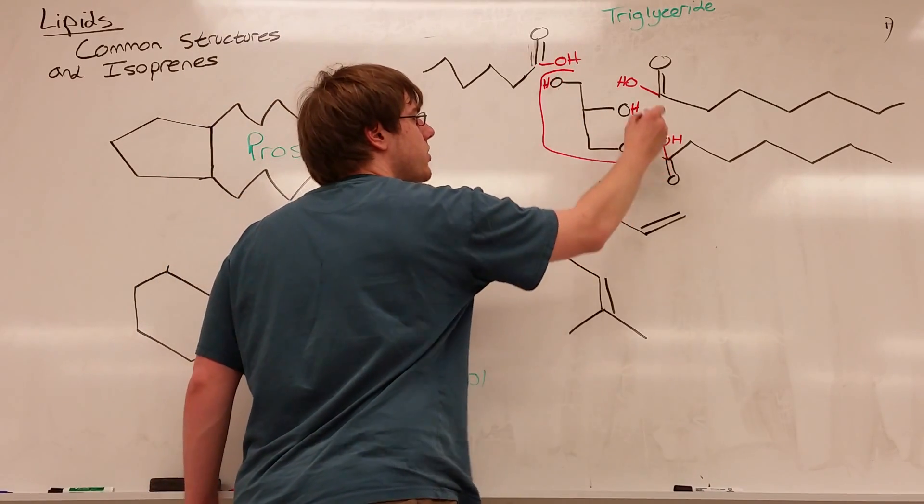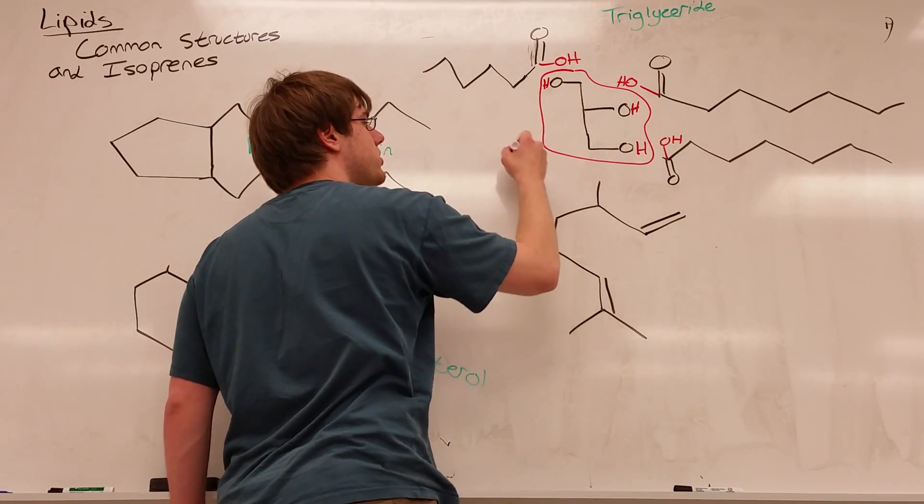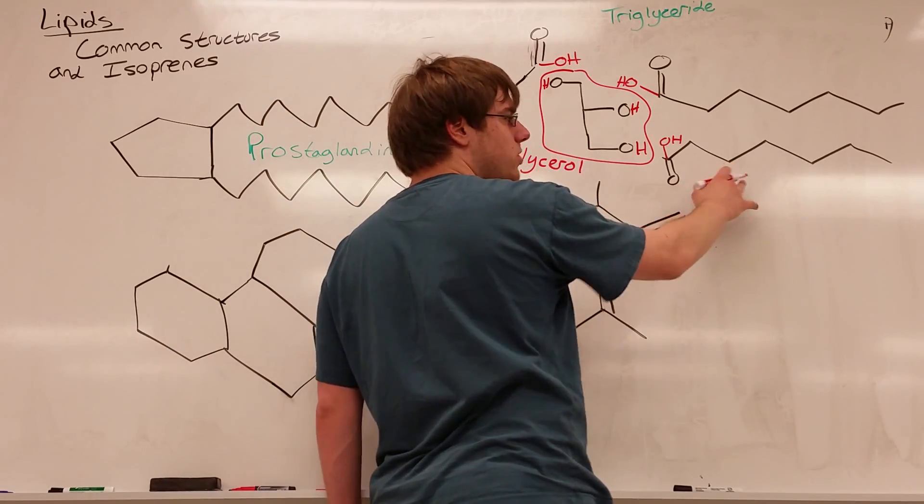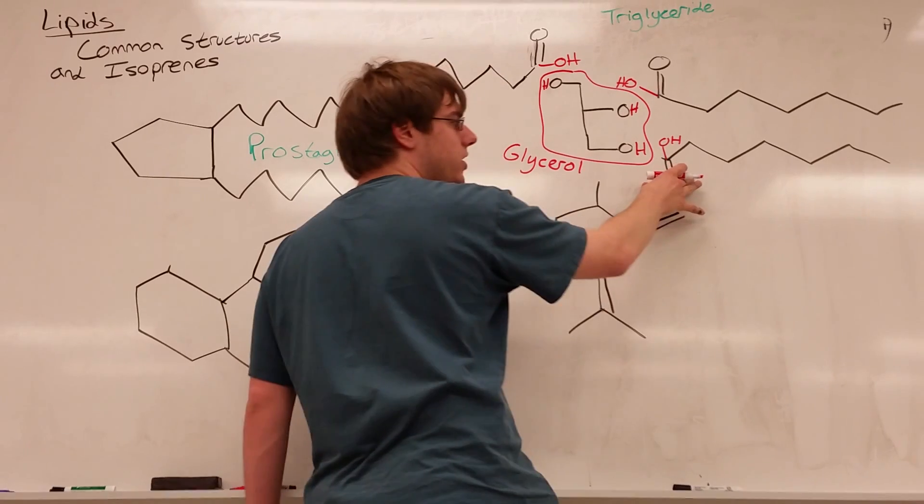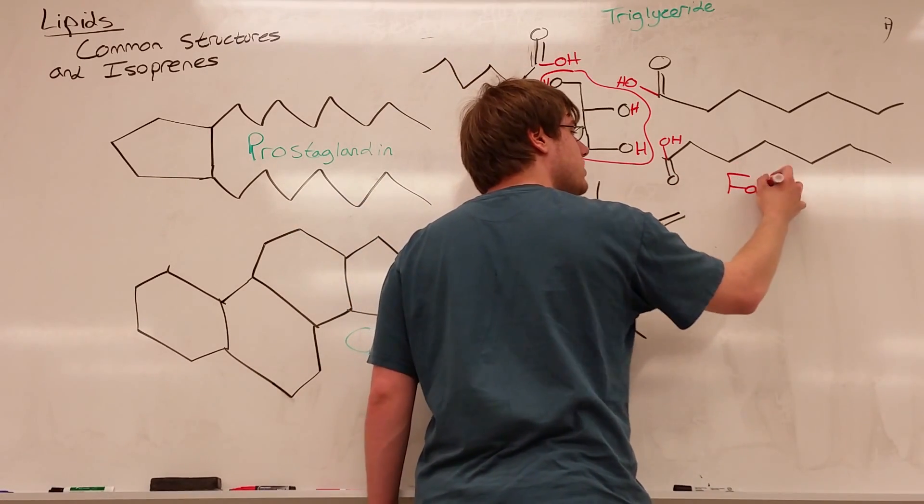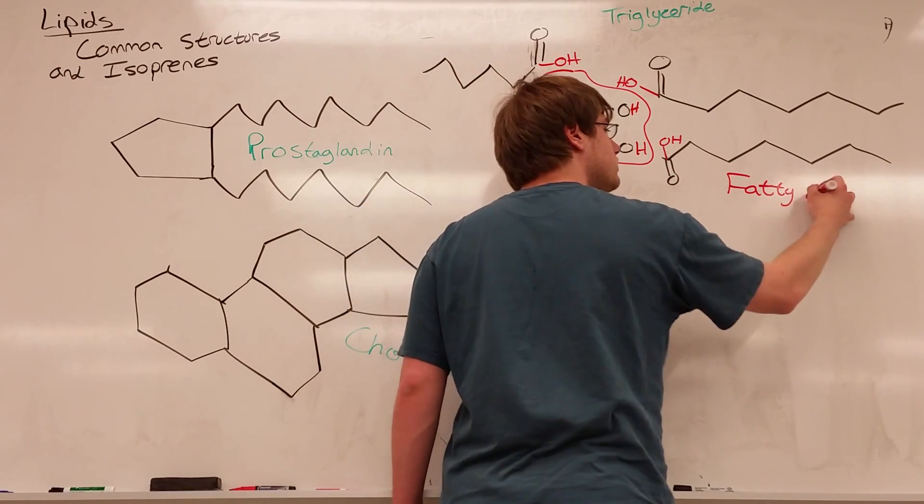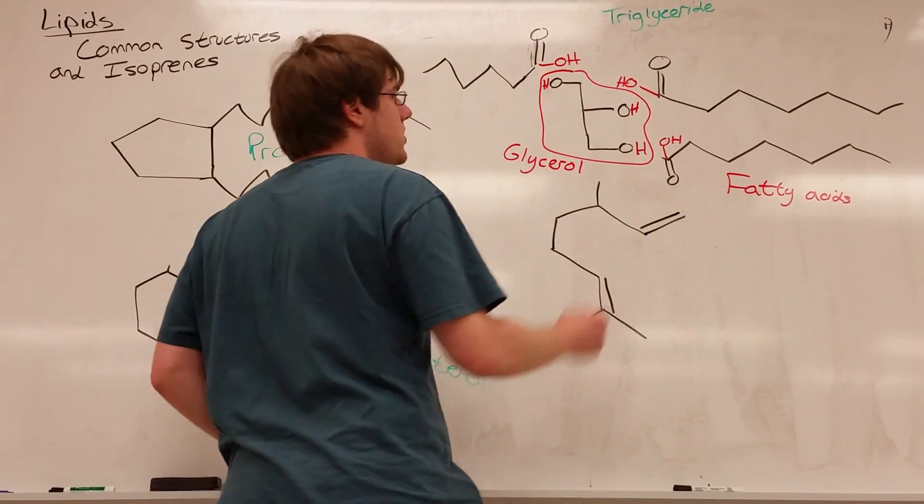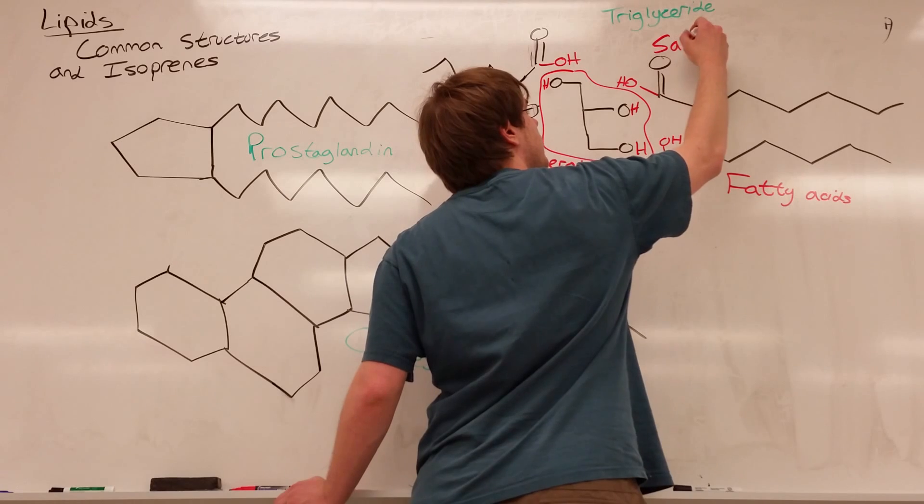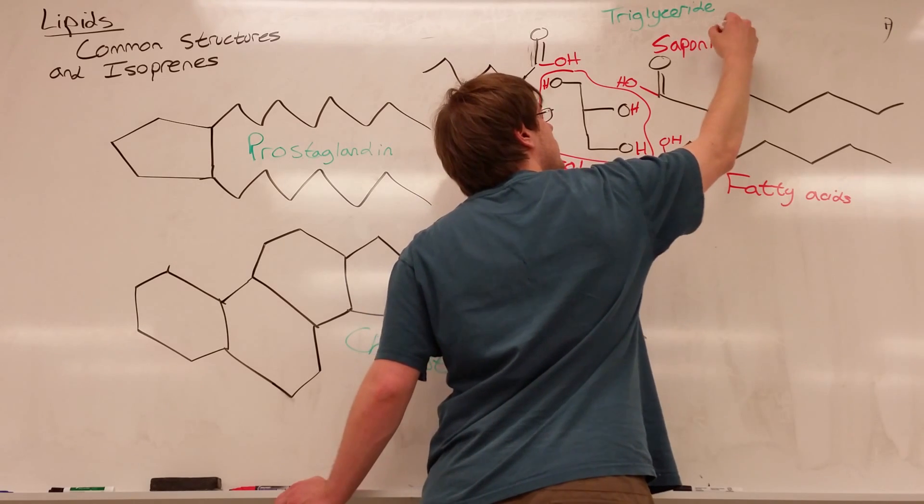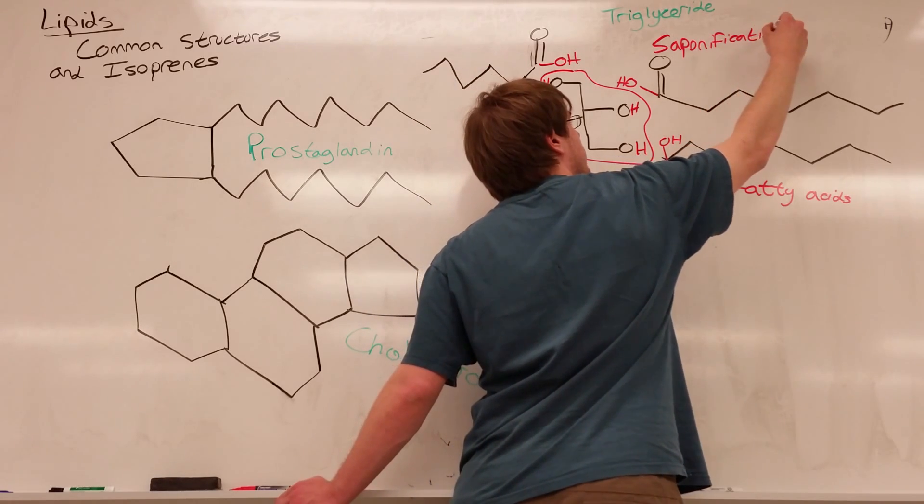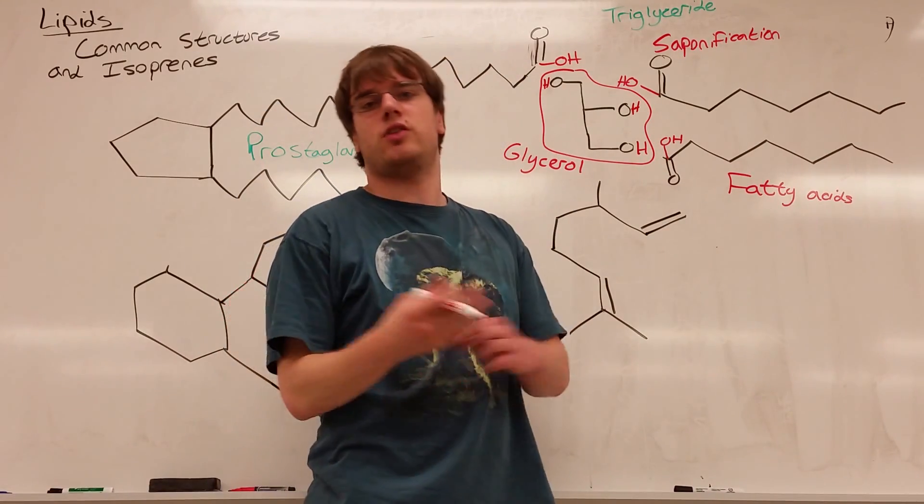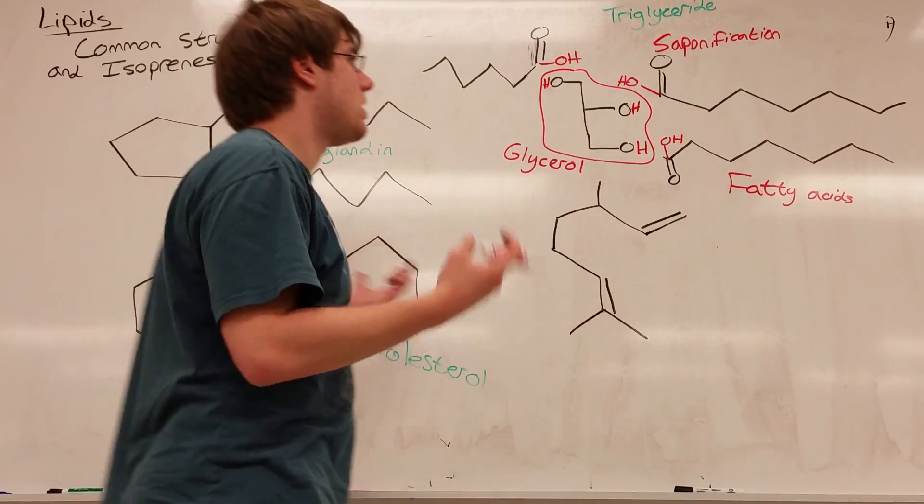And what this shows is the carbon chain with the three OHs—that is your glycerol. And the long carbon chains with carboxylic acids on them now, those are fatty acids. The process through which you combine these two to make the triglyceride is called saponification, which is something you learned about for the third exam.